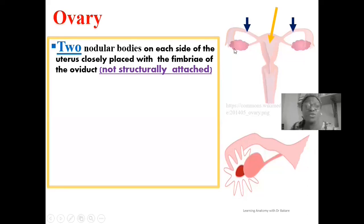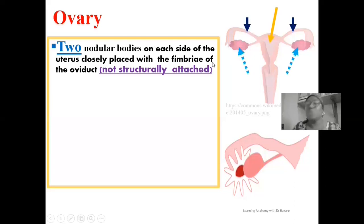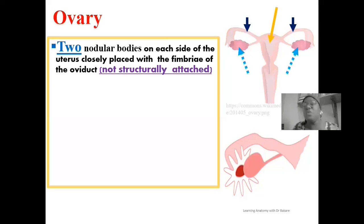At the terminal end of the fallopian tube, we have the ovary placed here, arrowed in blue. We have two — one on each side. The ovary is located around the terminal portion of the uterine tube. However, it is important to note that the ovary is not structurally attached to the terminal end of the uterine tube, even though it is closely positioned to it.